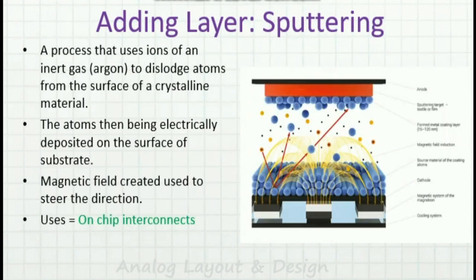Another way of adding a layer is sputtering. This process uses ions of an inert gas like argon to dislodge atoms from the surface of a crystalline material. The atoms are then electrically deposited on the surface of the substrate, and a magnetic field is used to steer the direction of atom deposition. This is very useful for on-chip interconnects — metal 1, metal 2, and so on — which are formed using the sputtering technique.